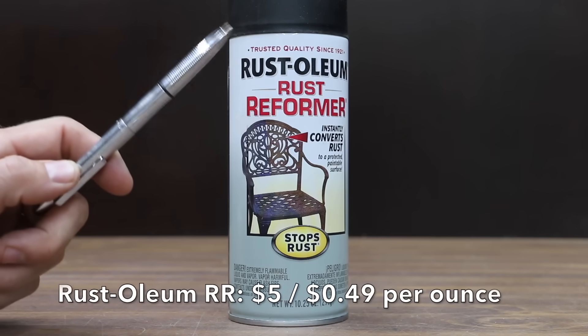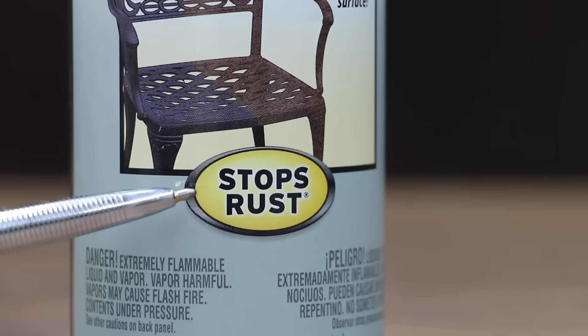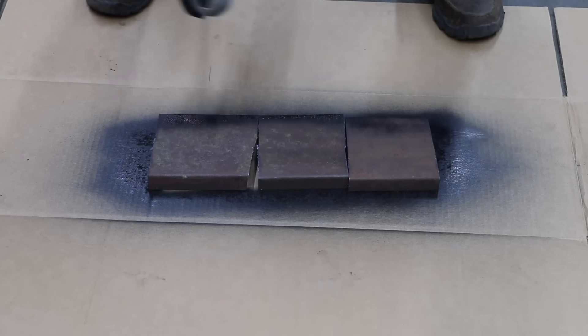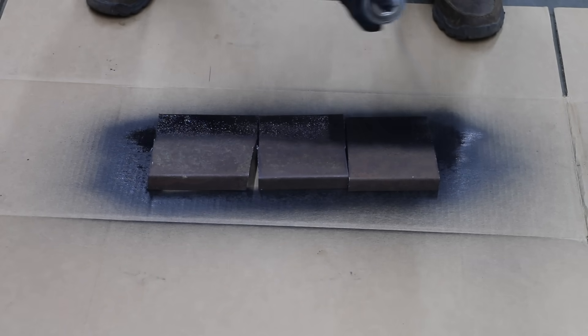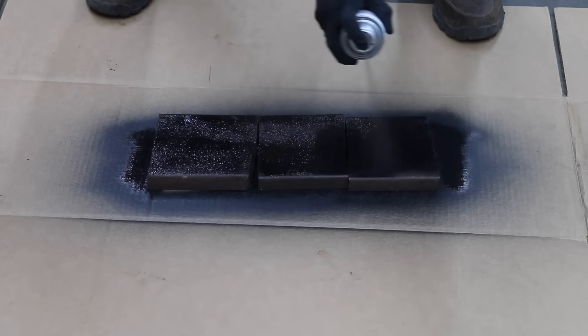At a price of only $5 for 10.25 ounces or 49 cents per ounce is this Rust-Oleum Rust Reformer. Stops rust, instantly converts rust. The Rust-Oleum is made in USA. Shake can vigorously for 1 minute after a ball begins to rattle. Keep the can in motion while spraying. The applied surface will turn black. One coat is sufficient.